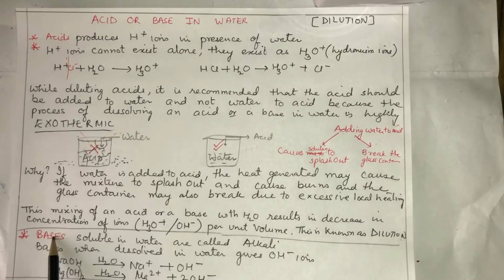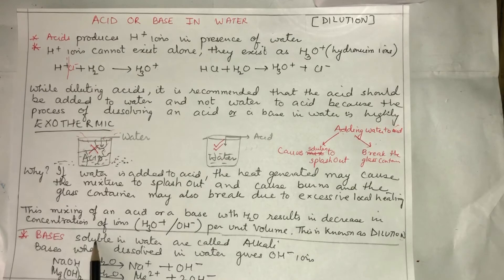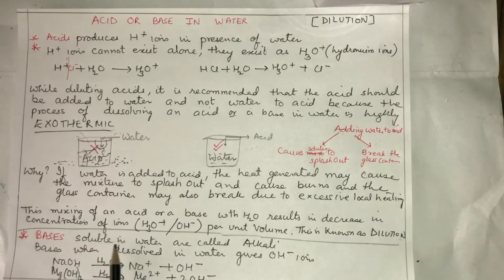Now, if we talk about dilution of bases - bases soluble in water are called alkalies. When base is dissolved in water, it gives OH- ions.